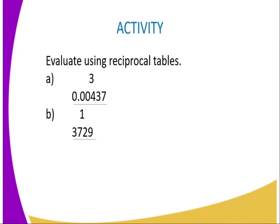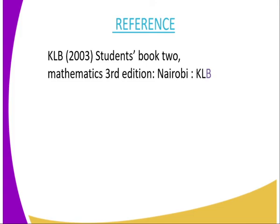We have come to the end of today's lesson. For your assignment, question 1: evaluate 3 ÷ 0.00437 using the reciprocal tables. Question 2: find the reciprocal of 1 ÷ 0.0043729, applying the reciprocal table in your computation. For reference, you can refer to student mathematics books.